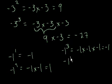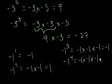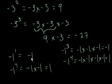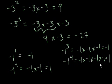Negative 1 to the fourth power is negative 1 times negative 1 times negative 1 times negative 1, and all the negatives end up canceling out and you get 1. So you see: when we did it to the first power, we got negative 1; to the second power, we got positive 1; to the third power, we got negative 1 again; and to the fourth power, it became positive again.